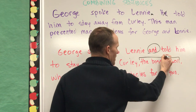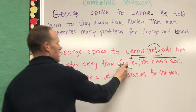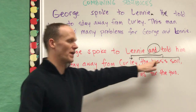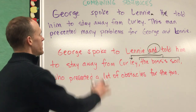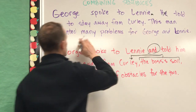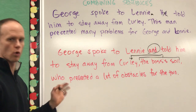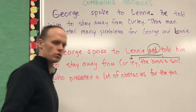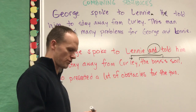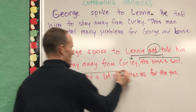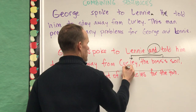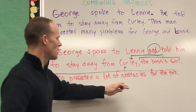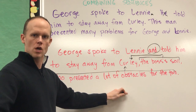After 'Curly,' I've inserted an appositive — I'm explaining who Curly is: 'the boss's son.' That's something new. Then I took the sentence 'This man presented many problems for George and Lenny' and turned it into a non-essential adjective clause: 'who presented a lot of obstacles for the two.' That clause gives more information about Curly. I've taken the essence of that sentence and embedded it right there following Curly's name.